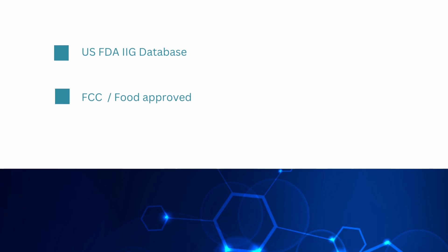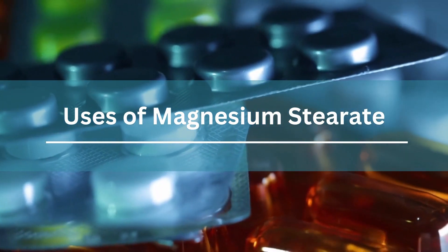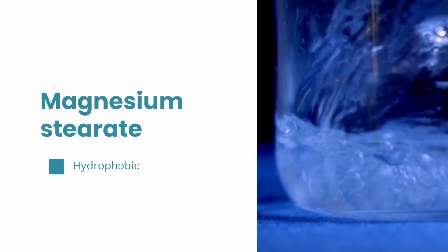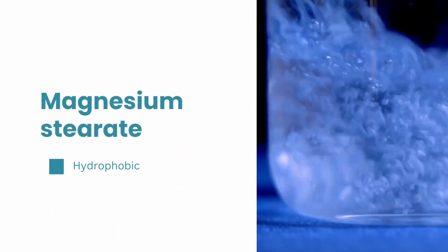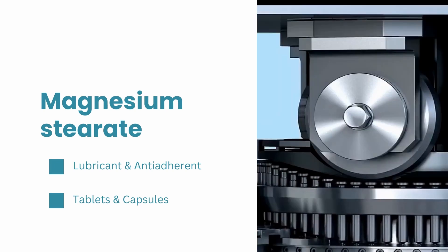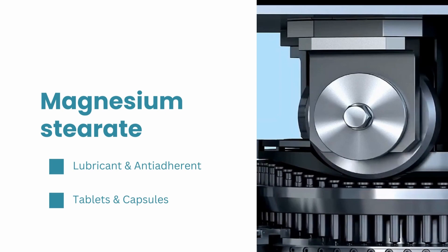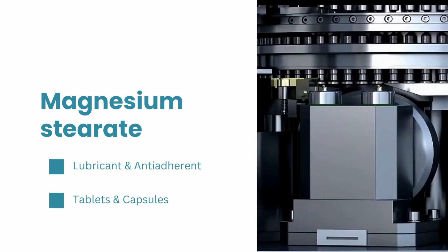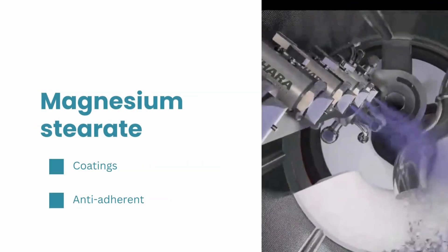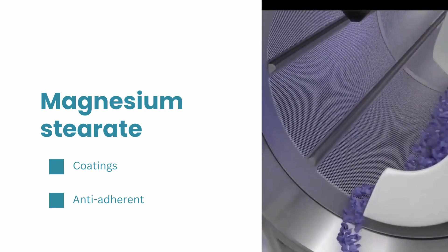A specification for magnesium stearate is included in the Food Chemicals Codex, which allows it to be used in food products. Magnesium stearate is used in pharmaceutical products, cosmetic formulations, and food products, taking advantage of its water-repelling properties. It is the most commonly used metallic salt lubricant and excipient in pharmaceutical and nutraceutical tablets. The hydrophobic nature of magnesium stearate also makes it useful as a lubricant and flow-enhancing agent in the manufacture of pharmaceutical tablets and capsules on high-speed tablet machines and capsule-filling equipment. It is used to reduce sticking and improve the moisture resistance of coatings, and also to improve the stability and shelf life of active ingredients that are moisture-sensitive.